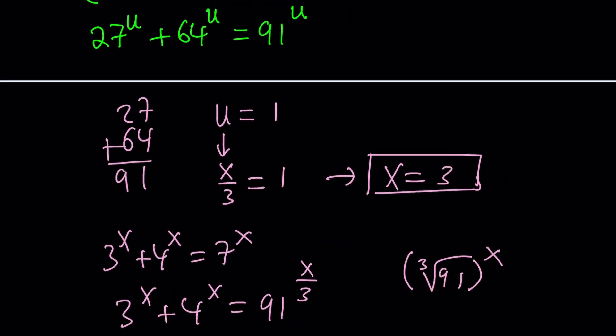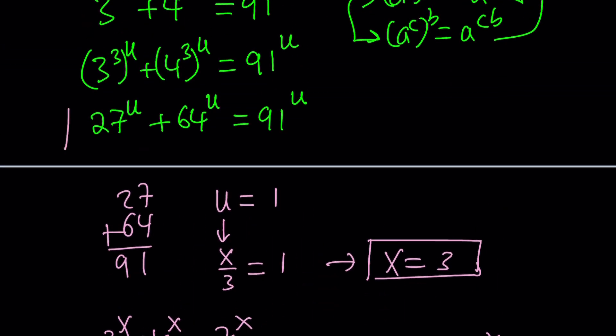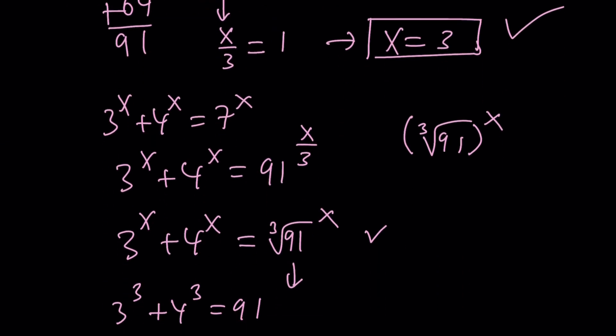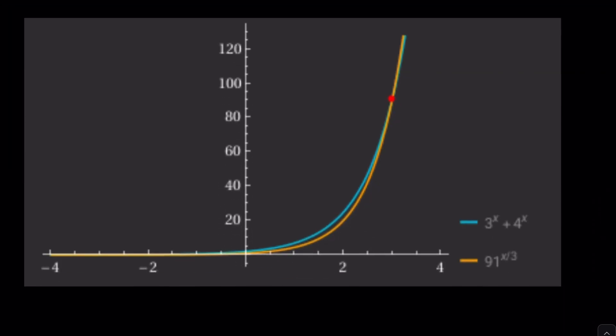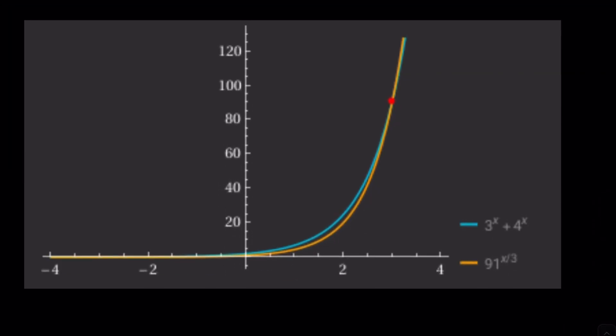But notice that with substitution, it becomes much nicer. I can't tell you enough how much nicer it's going to get. So, x equals 3 is a solution, and that is the only solution. Let's go ahead and check the graph from Wolfram Alpha, which also verifies that there is a single intersection point at x equals 3.